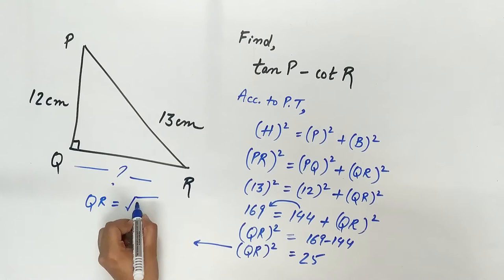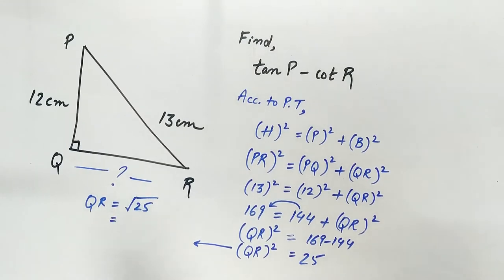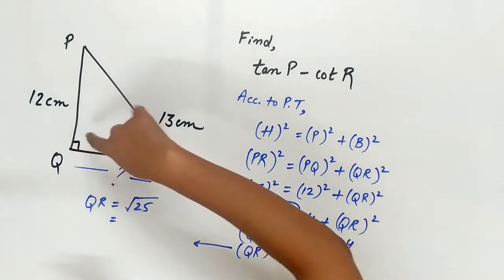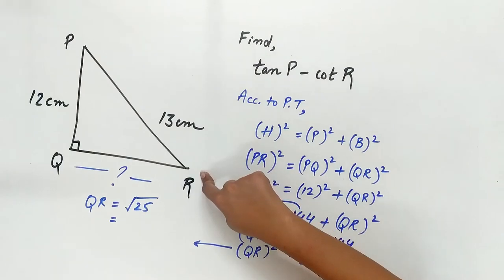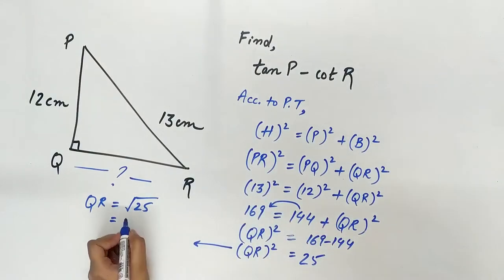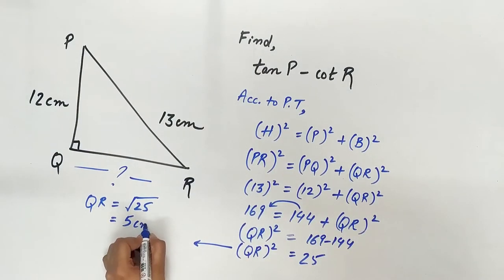QR is the square root of 25. QR is the length of the side of a triangle, it cannot be negative, so QR is 5 cm.